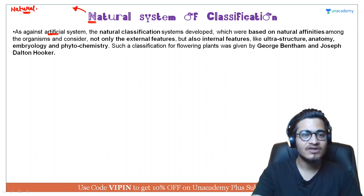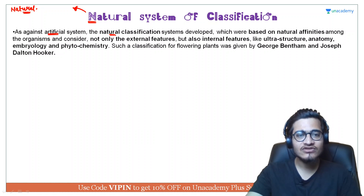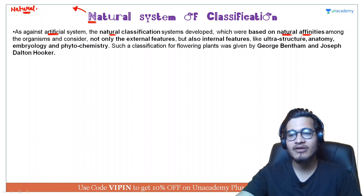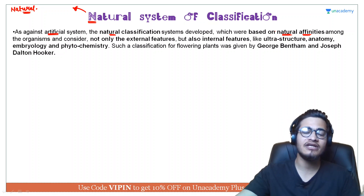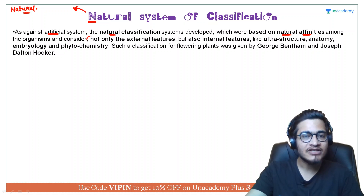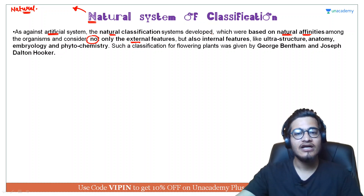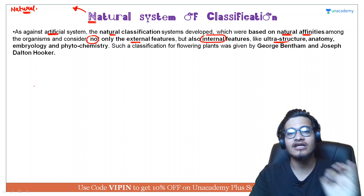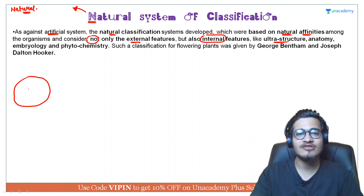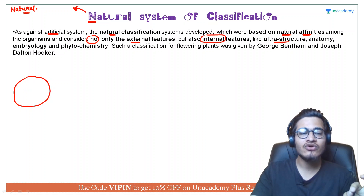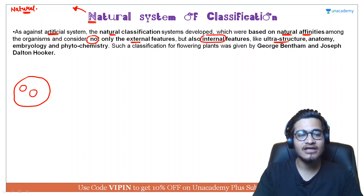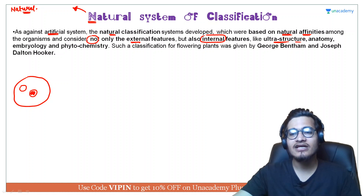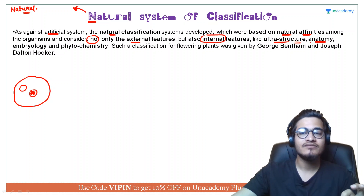Against the artificial system, natural system jo tha yeh natural affinities par based tha — yani yahaan par aap nature dvaara diye gaye characters aur unki interactions ko bhi judge karte the. Sirf external features ko nahi, balki internal features par bhi barabar gaur farmaya gaya. Jaise ki ultra structure — matlab aap cell ke andar ghus chuke hain. Agar ek cell hai jisme boundary hai aur andar saare organelles present hain, to un organelles ki organization, unka feature, unka number — yeh saari cheezein bhi dekhi ja sakti thi. Ise particularly ultra structure of a cell kaha gaya.